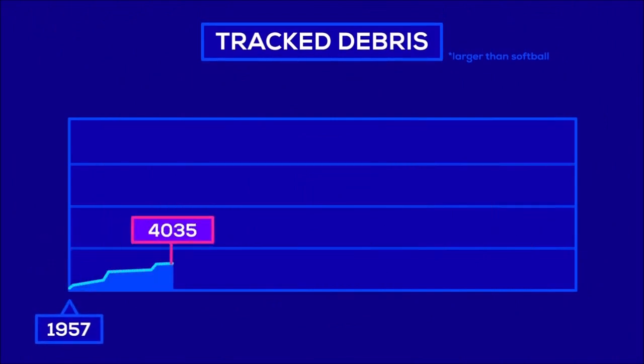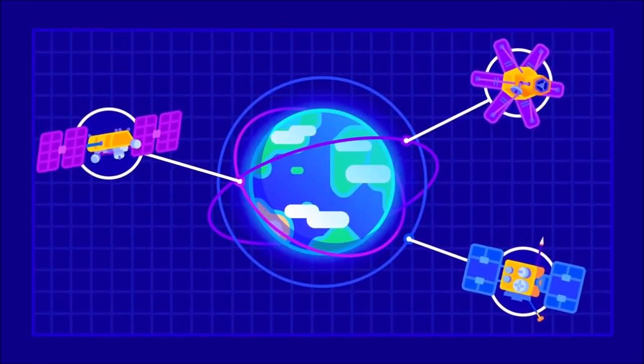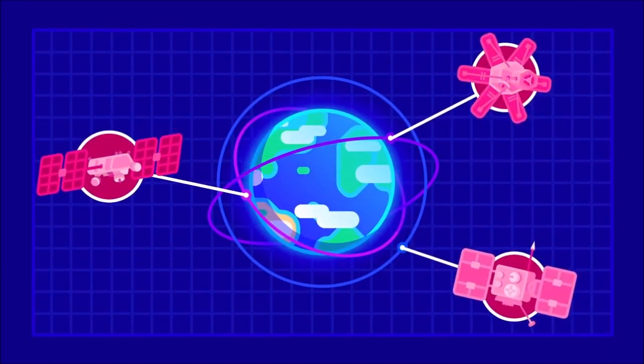The situation in orbit is rapidly worsening, and we may already be past the point of no return. Within ten years, space around Earth may no longer be viable for long-term satellites or rockets.